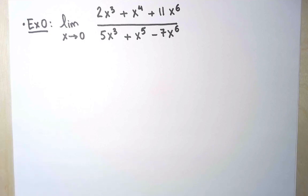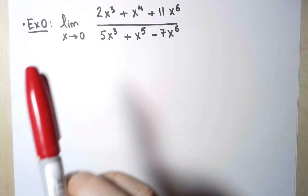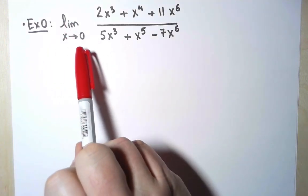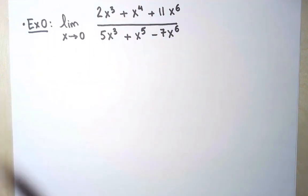Before I get to real examples, here is a very easy calculation. I want to compute the limit as x approaches 0 of this quotient of polynomials. And perhaps you can tell me what the answer is right away, without doing anything.